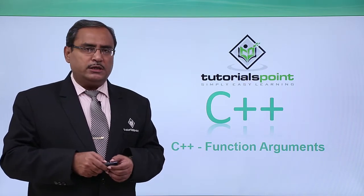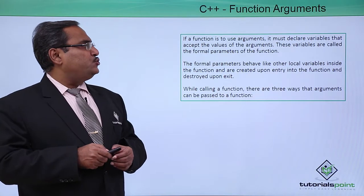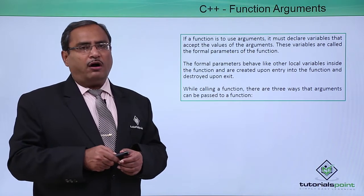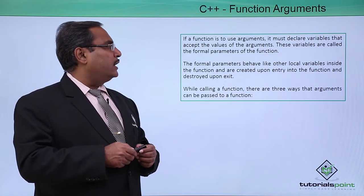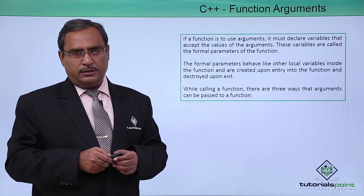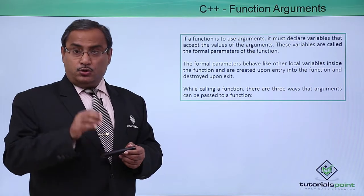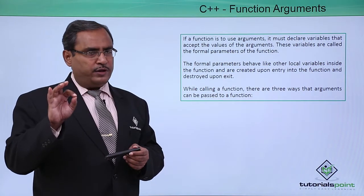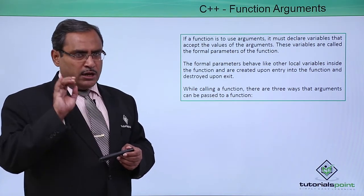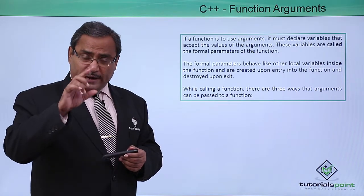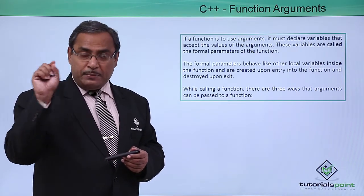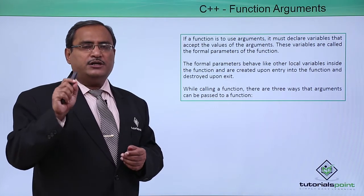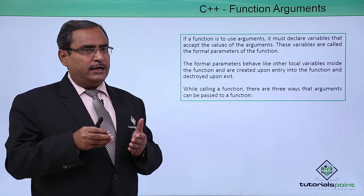C++ function arguments. If a function is to use arguments, it must declare variables that accept the values of the arguments. These variables are called the formal parameters of the function. In the previous program, we showed that to pass two arguments to the max function, two variables were defined and passed as input arguments. When we define the max function, we have two parameters to receive those argument values. Those parameters defined with the function definition are treated as local variables.